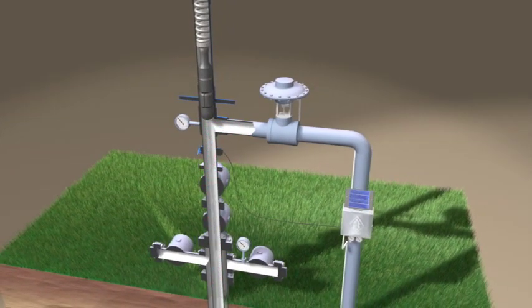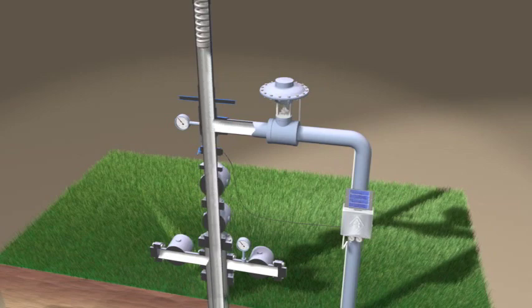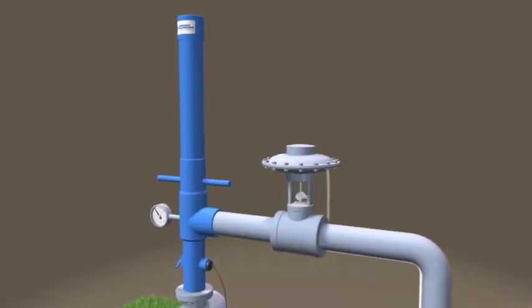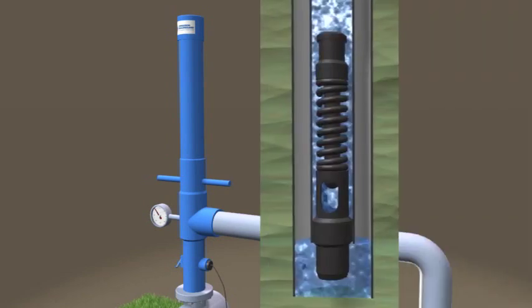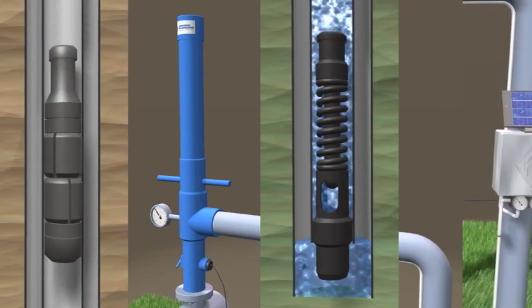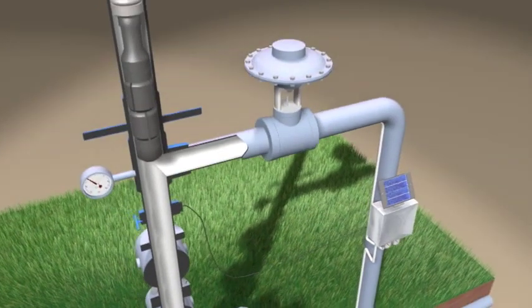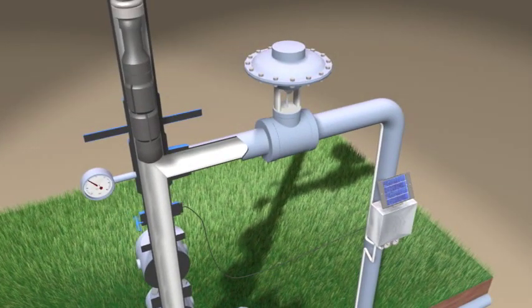So what exactly is the plunger lift system? A typical system consists of a lubricator catcher assembly, a down-hole bumper spring, the plunger, and an electronic controller and motor valve. The controller operates the diaphragm-actuated valve mounted on the flowline to control the travel of the plunger.